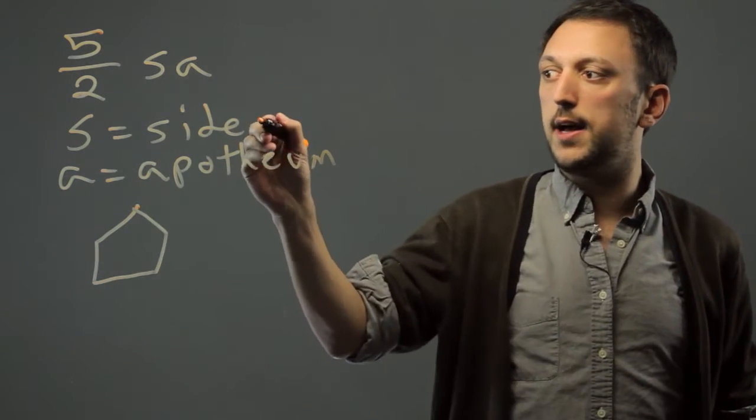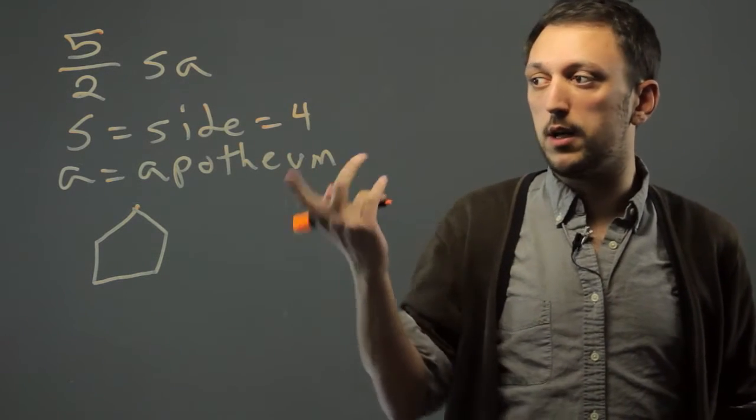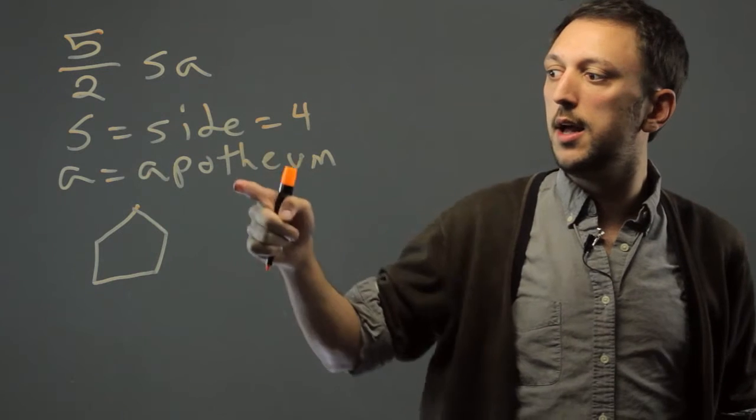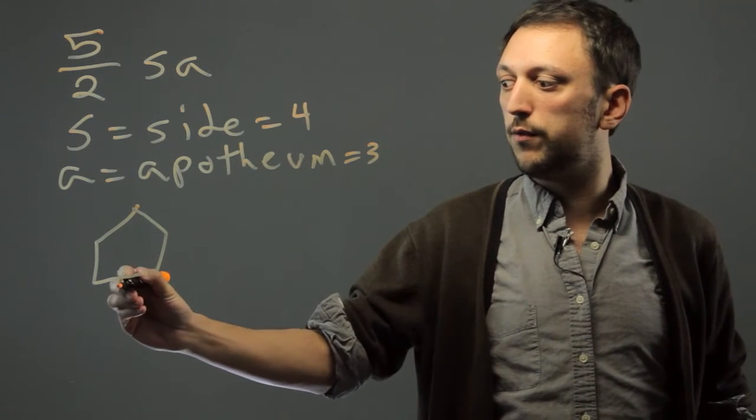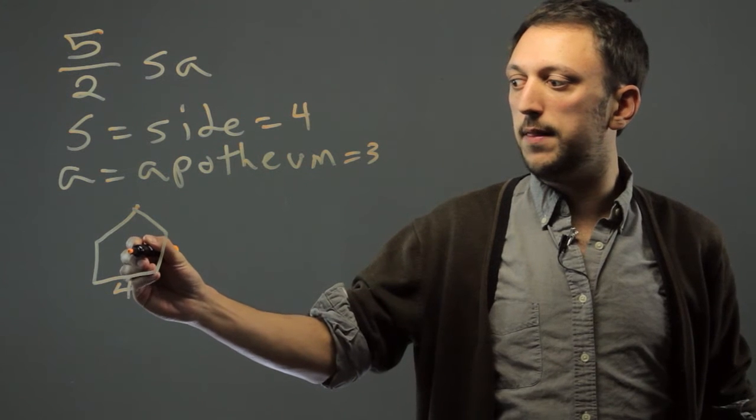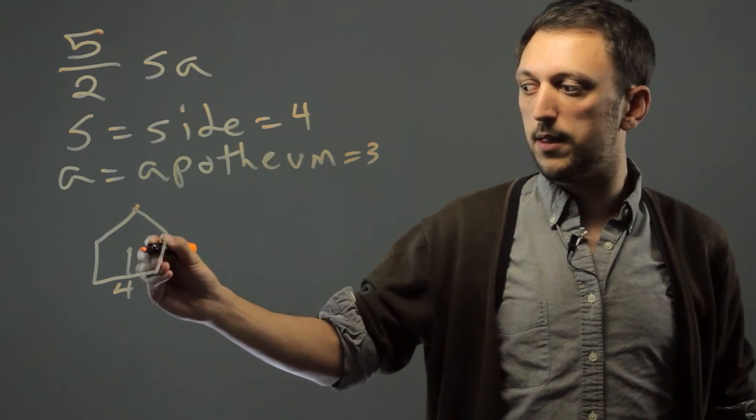So let's say side equals 4. It doesn't matter what measurement we're using, the number is what we multiply. And the apotheum equals 3. So 4 over here, and then from center to the middle of one side would be the apotheum. That would be 3.